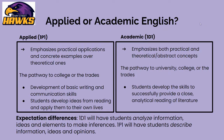In choosing between applied or academic English, here are some considerations. In the applied level course, the emphasis is on practical applications and concrete examples rather than theoretical ones — this is the pathway to college or the trades. Students develop ideas from reading and apply them to their own lives, as well as developing basic writing and communication skills. The academic stream, on the other hand, emphasizes both practical and theoretical and abstract concepts — this is the pathway to university, college, or the trades. Students develop the skills to successfully provide a close analytical reading of literature. The key difference between the 1D and 1P courses is largely analysis versus description.